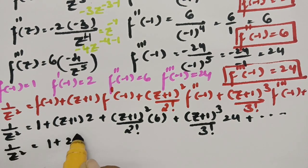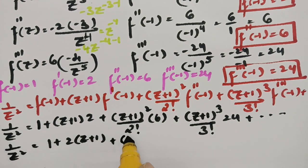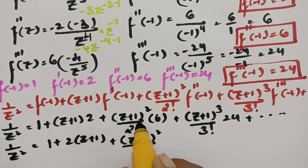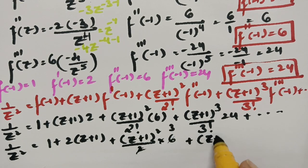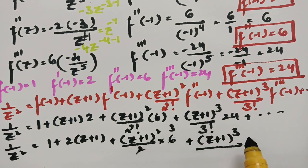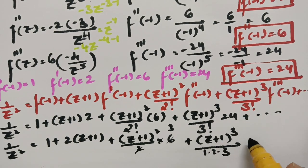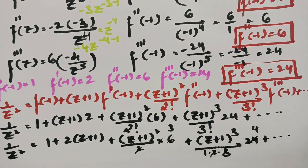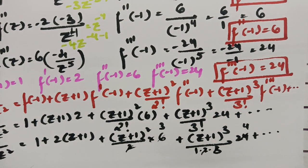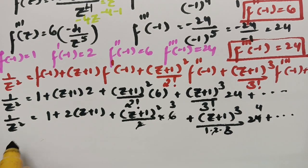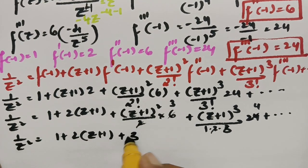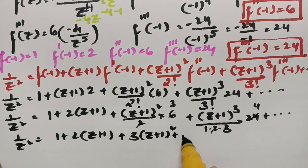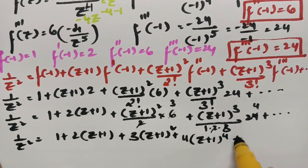Simplifying each term: 1/z² = 1 + 2(z+1) + 3(z+1)² + 4(z+1)³ + ... and so on. The coefficients follow the pattern 1, 2, 3, 4, ... which equals (n+1) for n = 0, 1, 2, 3, ...